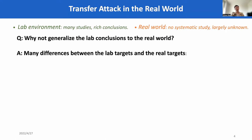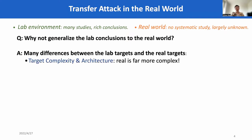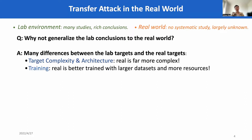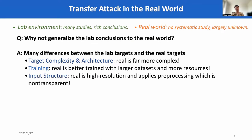This is because there are many differences between the lab targets and the real targets. First, the real model is far more complex because they are required to process much more complex tasks. Second, the real model is better trained with larger datasets and more resources, which is not affordable by many local targets. Third, the real input is high resolution, but many previous lab conclusions are drawn from low-resolution images, such as CIFAR, which is only 32 by 32.